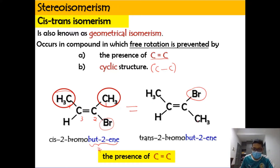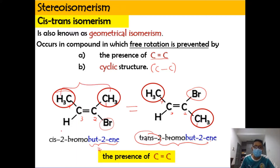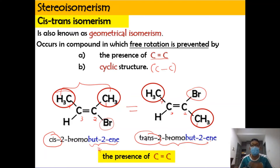The second structure has the same parent name, 2-bromo-but-2-ene, with bromine still at carbon 2 and the double bond at position 2. However, this is a trans isomer because the same species are diagonal to each other. When they are on the same side it is cis; when diagonal it is trans. Don't worry about the naming too much — it will be covered in later chapters.